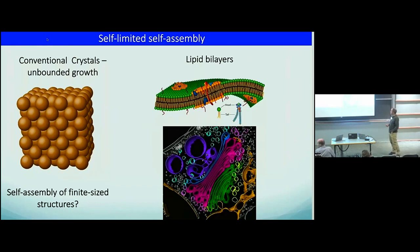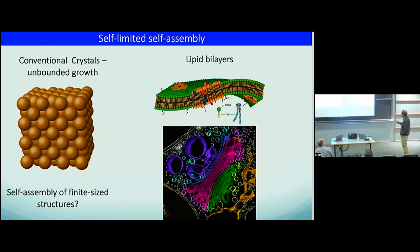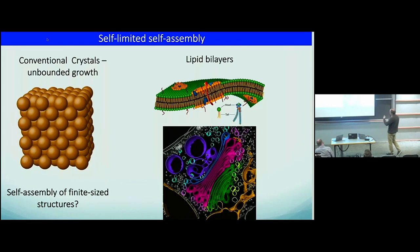One example of such self-limited self-assembly is lipid bilayers — a material with a hydrophobic core and a hydrophilic head. You start assembling this liquid-like sheet, and this is important in technology and biology. This is an EEM picture of lipid structures within a vesicle, and they have this amazing ability to create diverse three-dimensional topological shapes.